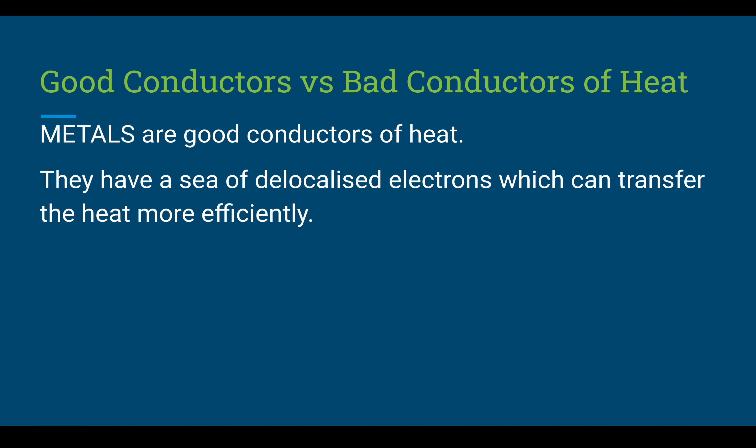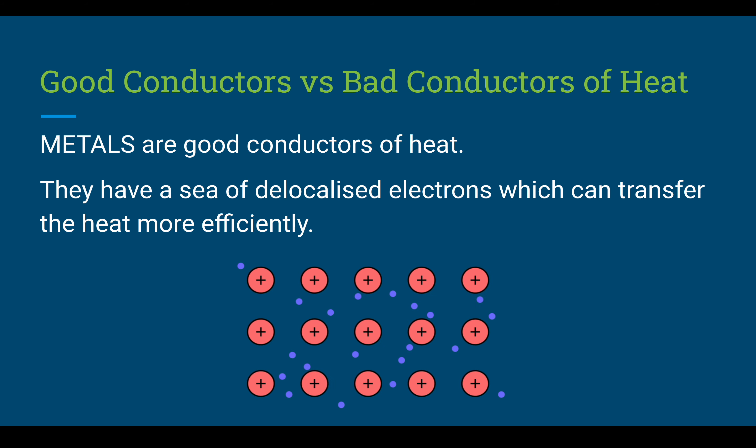Metals are generally considered good conductors of heat because they have a sea of delocalized electrons, which allows them to transfer heat more efficiently from one location to another. This is shown in the diagram below — the little purple dots are the electrons, and as you can see they're free to move around.